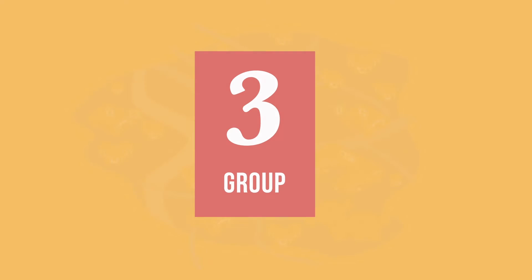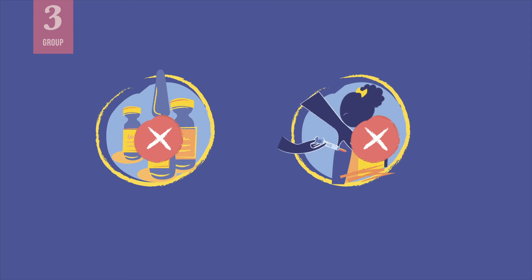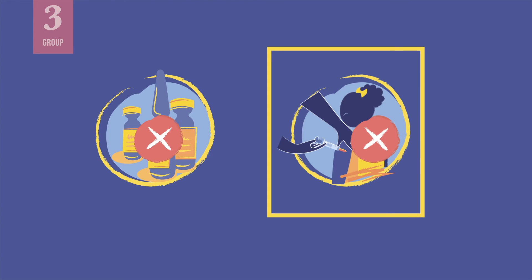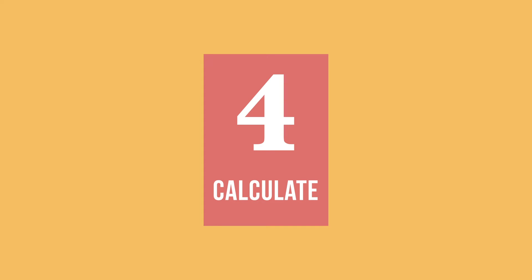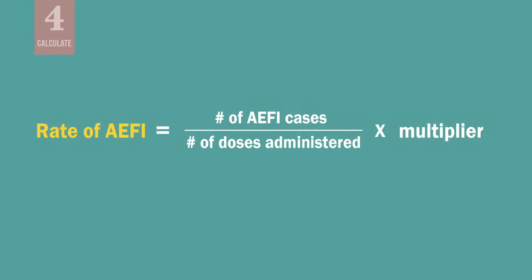Next, group the data by specific vaccine and type of AEFI. Analyze data by antigen or vaccine — such as BCG, pentavalent, or measles — and by type of AEFI, such as high fever or abscess. Organizing the data this way can help you identify cases that may be due to vaccine defects or potential immunization errors. For example, an increased number of abscesses at one facility is more likely due to an immunization-related error. Be careful to consider the size of the population served when comparing AEFI data.